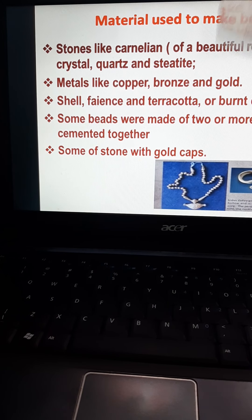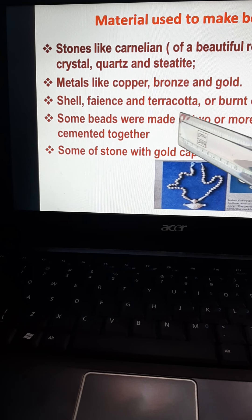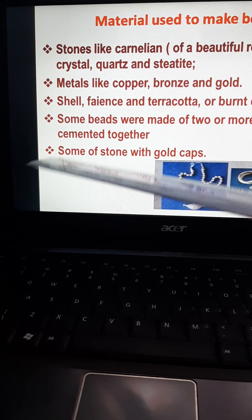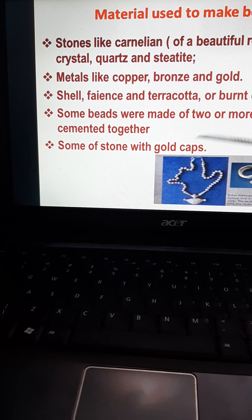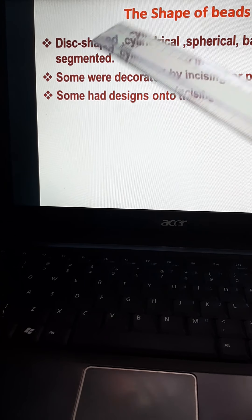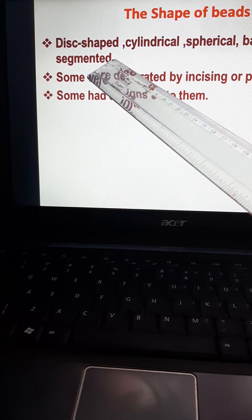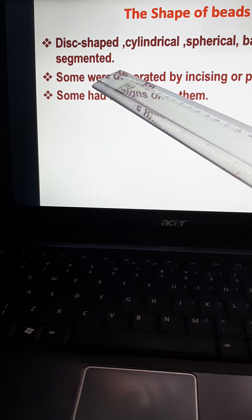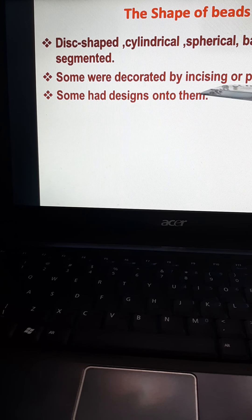Some beads were made of two or more stones combined or joined together and given a nice shape. Some stones were used with a gold cap placed on top, giving a beautiful appearance. The shapes given to beads included disc-shaped, cylindrical, spherical, barrel-shaped, and segmented. Some were decorated by incising — cutting into different fine shapes — or by painting. Some beads used to have designs upon them.